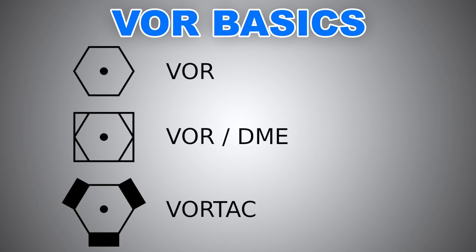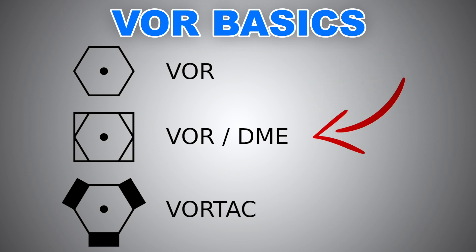Now let's look at how VORs are denoted on various aeronautical charts. The first symbol is the standalone VOR, meaning this facility will only provide you with bearing information — where you are in relation to the VOR and what radial you are on. It has no capability to broadcast your range from the facility, as it is not paired with DME. DME stands for Distance Measuring Equipment, a completely different system that transmits signals based on which you get distance information. Most aircraft nowadays are equipped, and most VORs are paired with DMEs. When that is the case, the VOR/DME facility is represented as such on VFR maps.